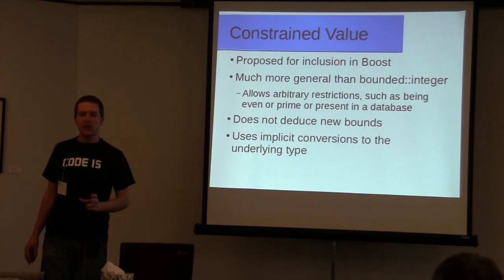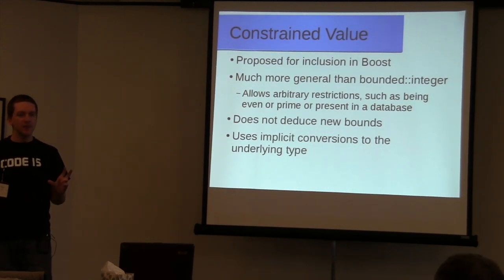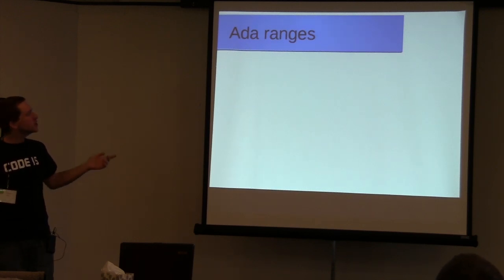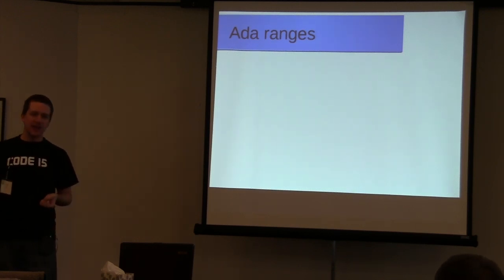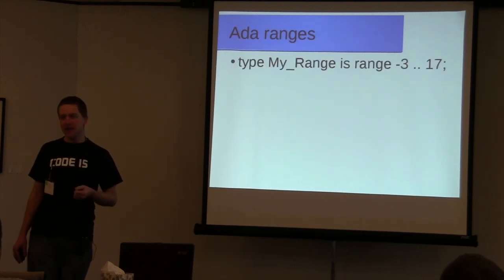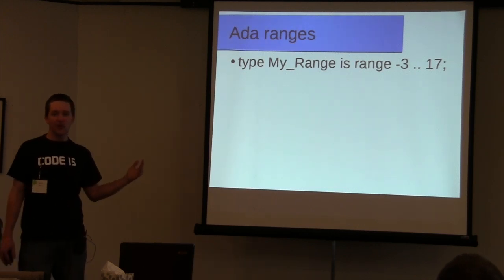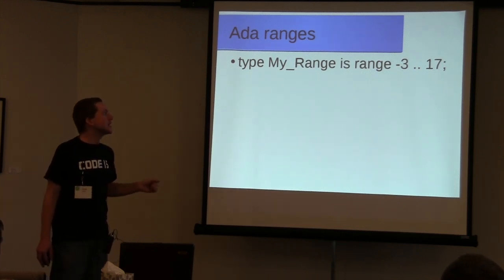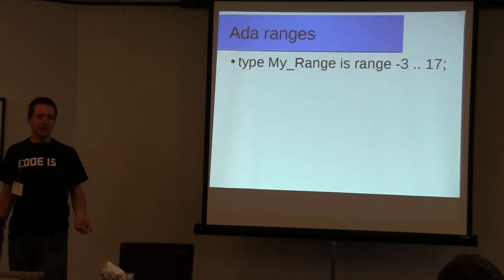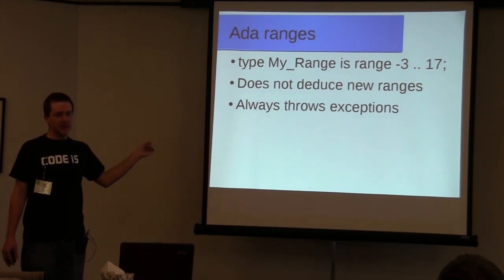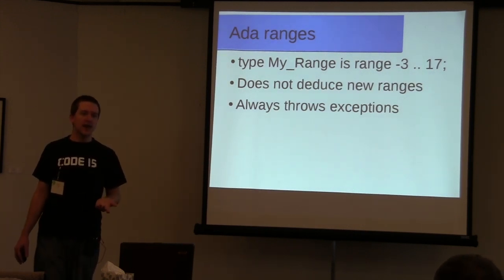There were actually a few cases in the constrained value proposal where, because of this implicit conversion, the constraints are no longer satisfied — it sneaks around the type checking system. The actual original motivation for this library was the Ada range type. Whenever people talk about safe languages, they always talk about Ada's integer ranges: you can say 'type my_range is range -3 .. 17' and it ensures that is the range of your type. But it also does not deduce new ranges and always throws exceptions — it's basically the Ada equivalent of the checked integer class.